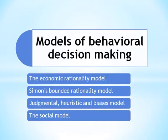Judgmental Heuristic and Biases Model. Kahneman and Tversky proposed the judgmental heuristic and biases model for decision-making with a behavioral approach. This model identifies the cognitive biases of the decision-maker and is considered an improvised model of the Bounded Rationality Model. It assumes that managers develop heuristics or rules of thumb on which to base their decisions as they gain experience. These heuristics help managers overcome pressure and time constraints. However, they also lead to biased decisions. This model identifies three major biases: the availability heuristic, the representative heuristic, and the anchoring and adjustment heuristic, which lead to a relatively irrational decision-making process.